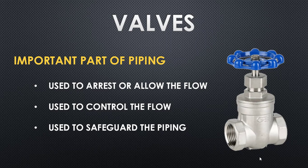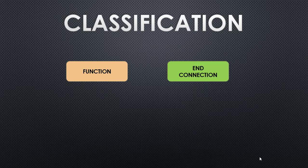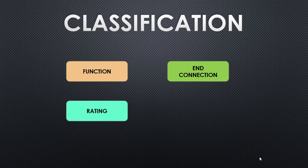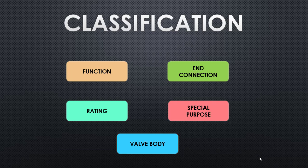We'll explore these functions with examples of each valve type so you'll understand how we arrest, control, and safeguard the piping. When it comes to classification, there are different types: classification based on function, based on end connections (flange end, socket end, butt weld end), based on pressure rating, based on special purpose, and based on the type of valve body.